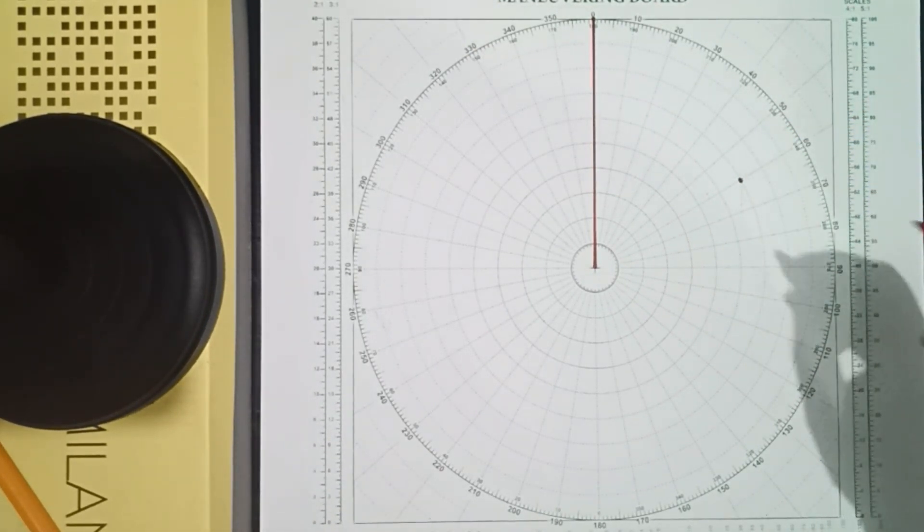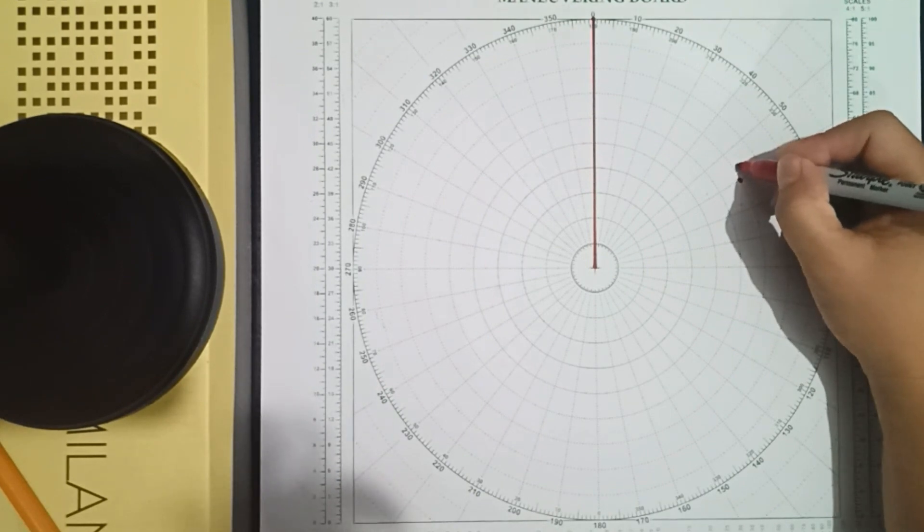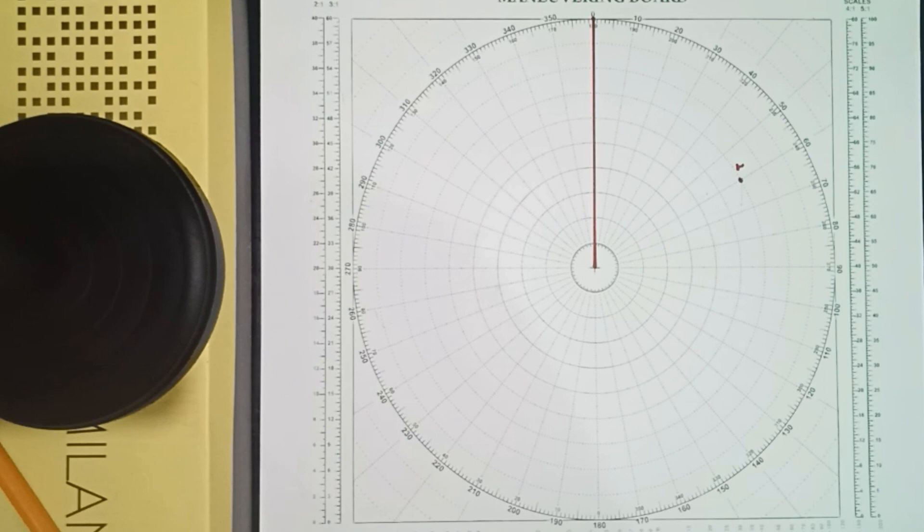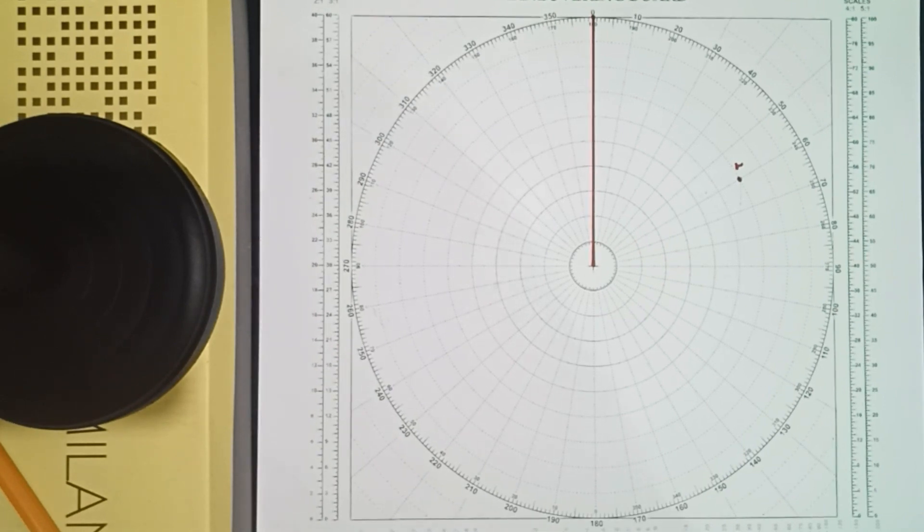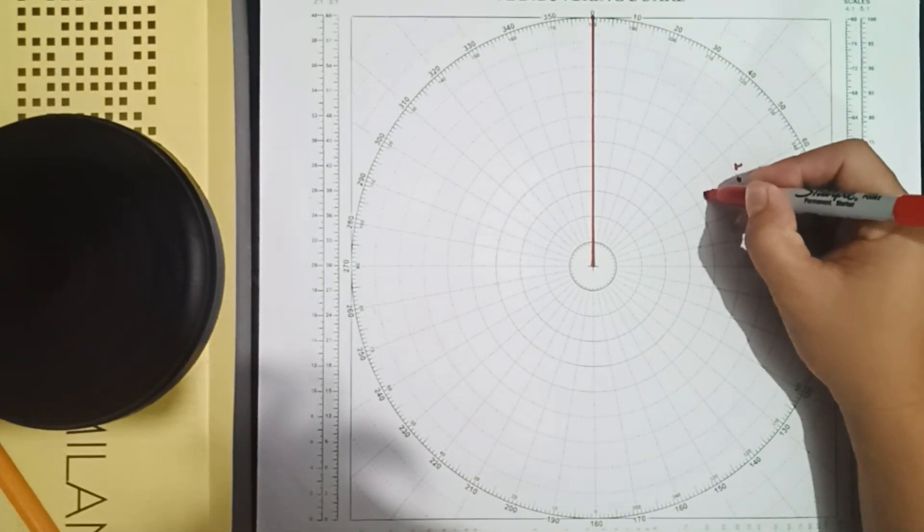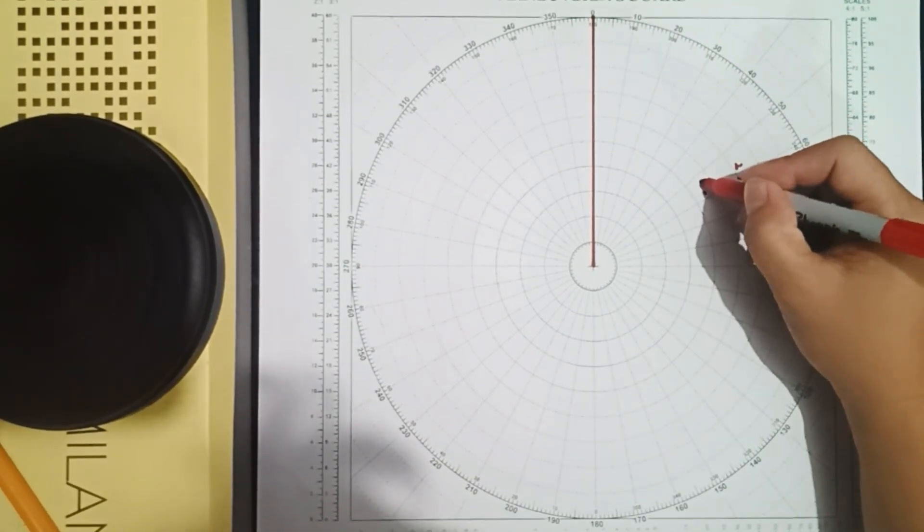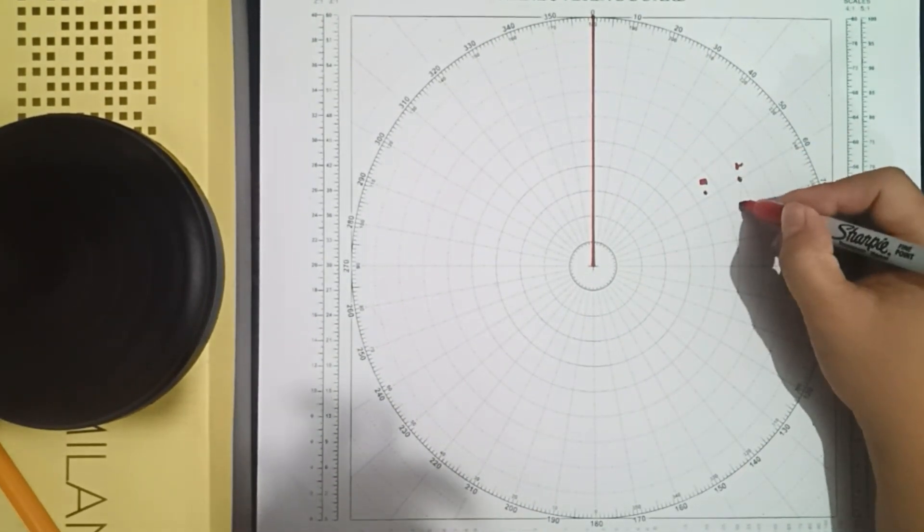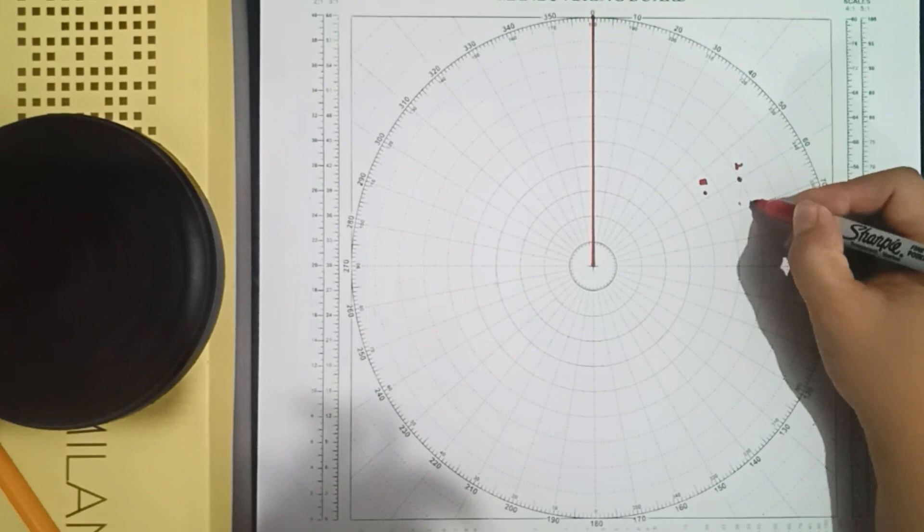The first observation is what you call the R. Then after 6 minutes, you have a second observation. This is your second observation, and this is what you call the M. And you have here the E.